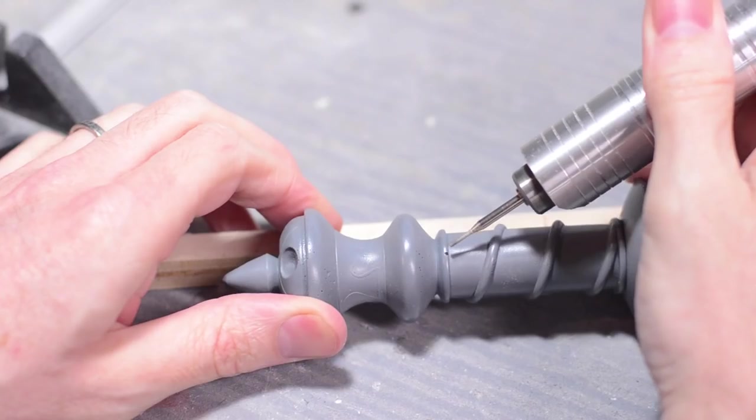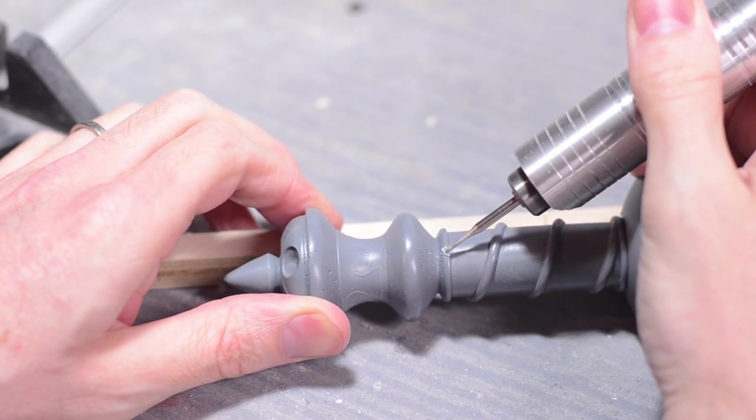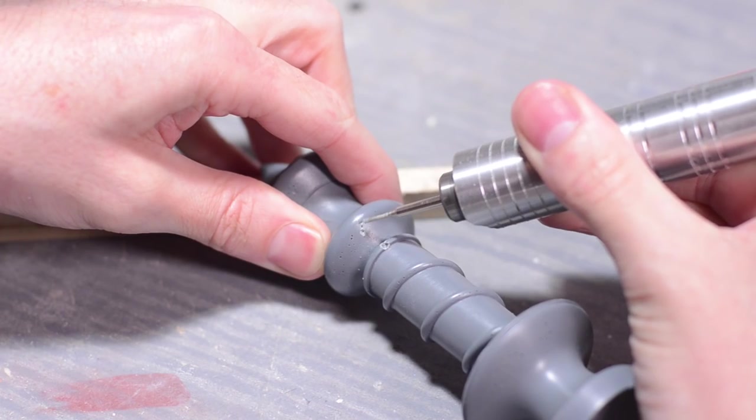I prefer to grind these bubbles out a little bit using my rotary tool. This gives a nice surface for our filler to bond to.